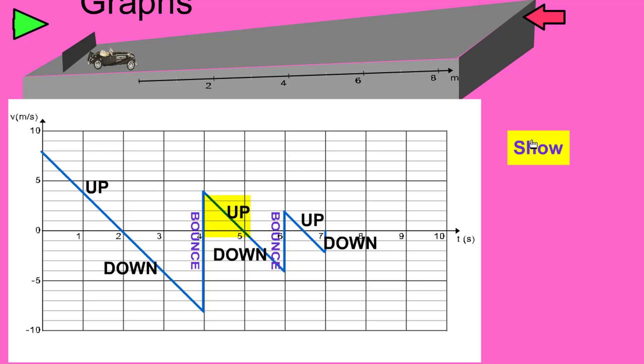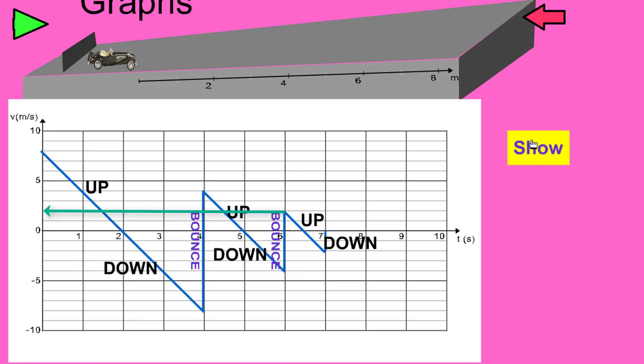After four seconds the car is making its way back up the slope, and the acceleration due to gravity is causing it to decelerate. At five seconds the car is at rest again, and between five and six seconds it rolls back down the slope. At six seconds there is a bounce — the car goes from a velocity of minus four meters per second to a positive velocity of two meters per second. Finally it comes down again, and at seven seconds it has its final bounce.